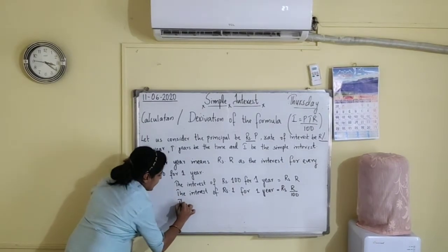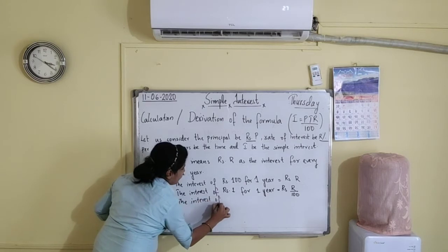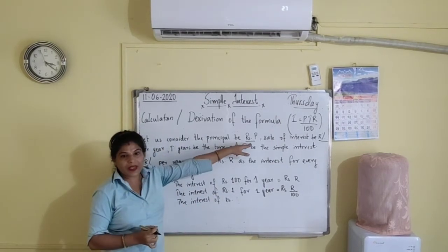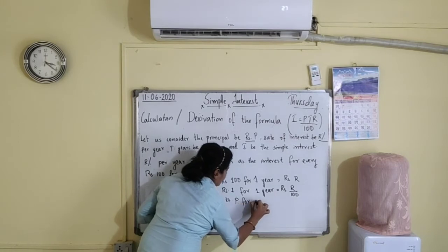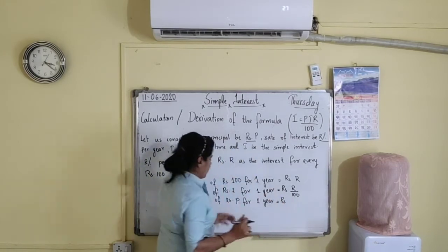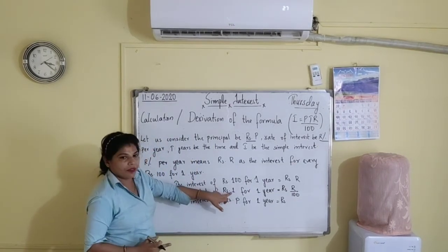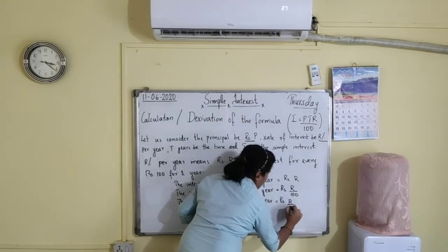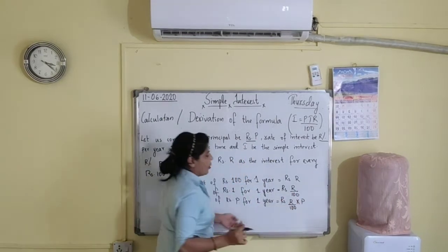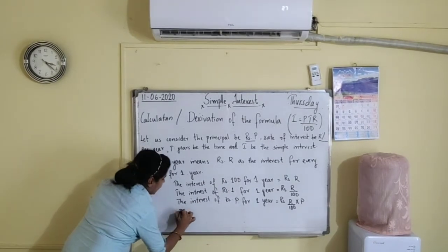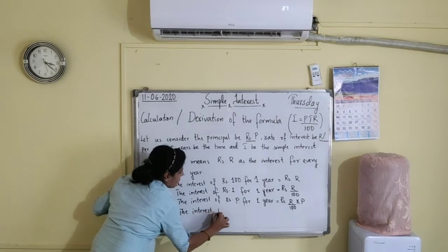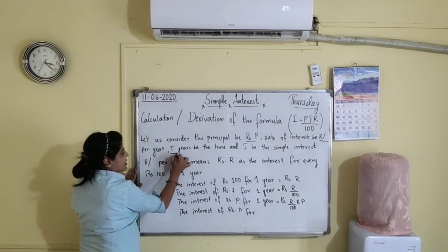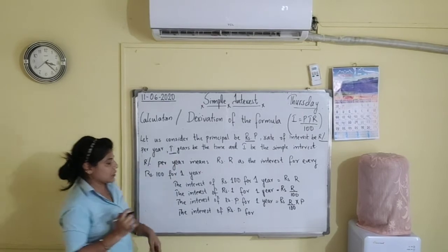Now we change rupees 1 to rupees P, because our principal is P. Since we are increasing from 1 to P, the interest will be more, so we multiply by P. The interest of rupees P for 1 year equals R upon 100 into P. Now we don't have 1 year; we have time T years, so we multiply by T.